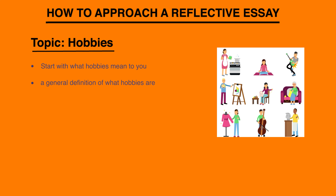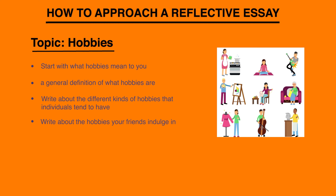That can be your introduction. In the next paragraph, you can write about the different kinds of hobbies that individuals tend to have — different kinds of hobbies, different inclinations of an individual. What are the hobbies that you are familiar with? What are the hobbies that you have heard your friends indulging in?